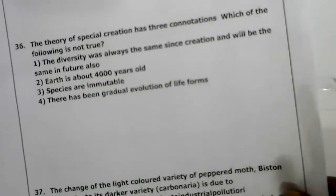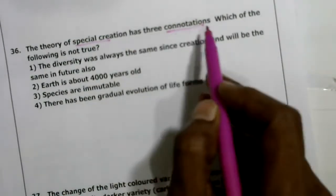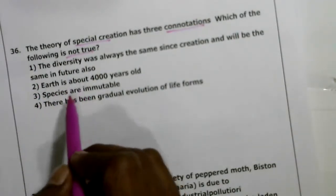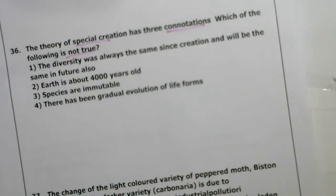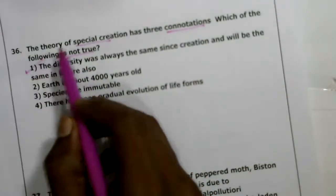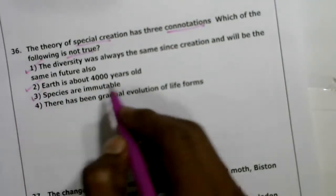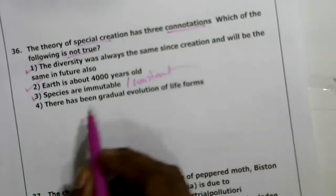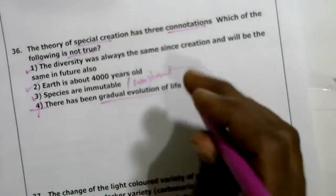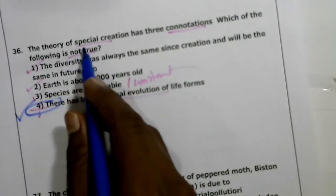Thirty-sixth question: theory of special creation has three connotations — which of the following is not true? The theory states: Earth is about 4000 years old (correct), species are immutable (correct), and diversity was always the same since creation (correct). But gradual evolution of life forms was not told by special creation. The fourth option — gradual evolution — is the correct answer as it is not explained by special creation.